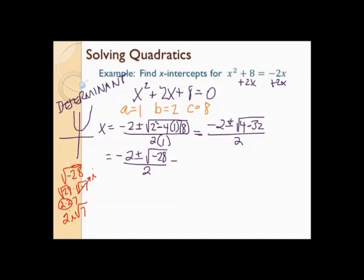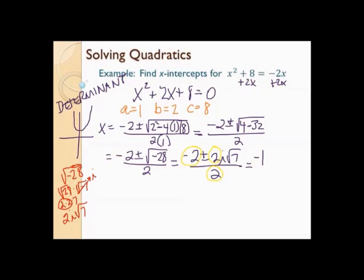I'm going to replace the square root of negative 28 with 2i square root of 7, all over 2. Now I need to simplify the fraction — all three terms are divisible by 2. Negative 2 divided by 2 is negative 1. You need to write the 1 when it's in that first term, but not when it's a coefficient of a radical after the plus or minus. 2 divided by 2 is 1, so that's just i square root of 7. And 2 divided by 2 on the bottom is 1 — I don't need to write it. So my final answer is negative 1 plus or minus i square root of 7.